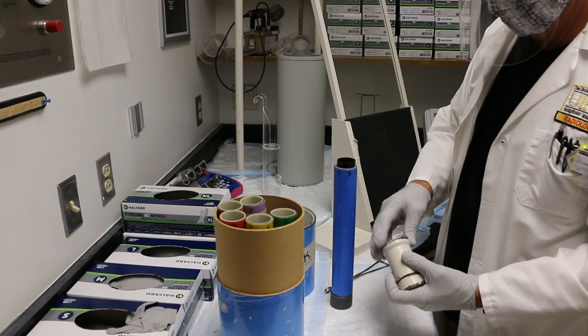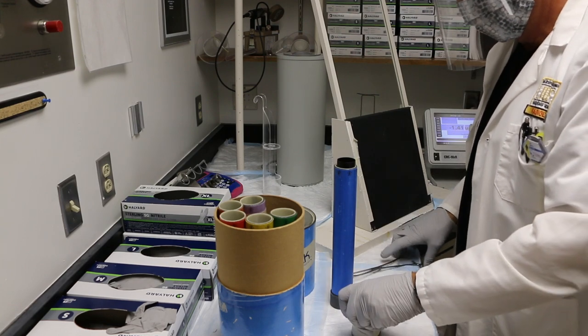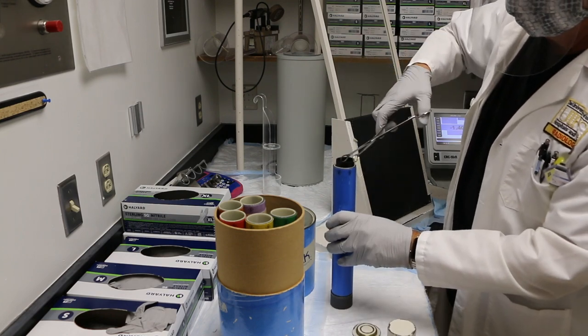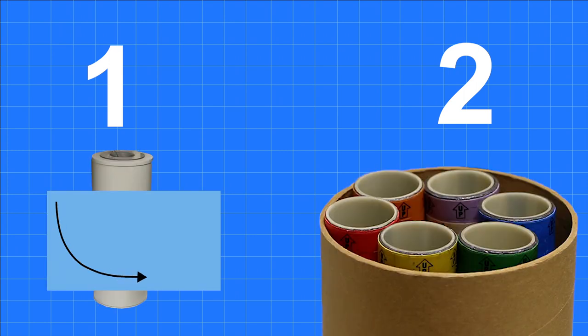A linearity test is performed quarterly to ensure that the dose calibrator is reading accurately along the continuum of values, from the microcurie to the millicurie range. There are two methods of testing the linearity of the dose calibrator: the decay method or the shield method.